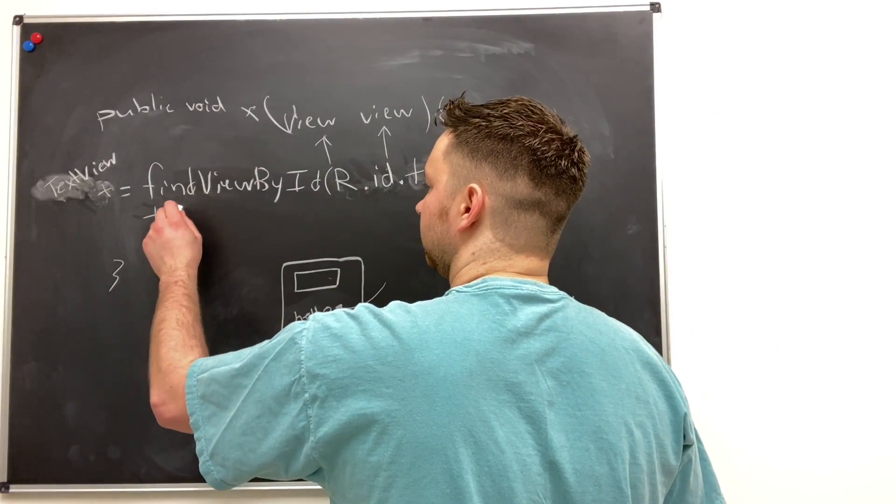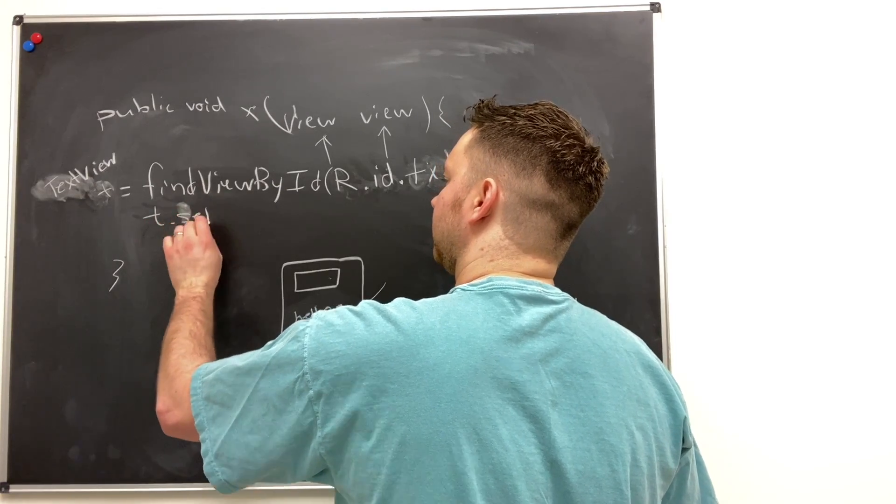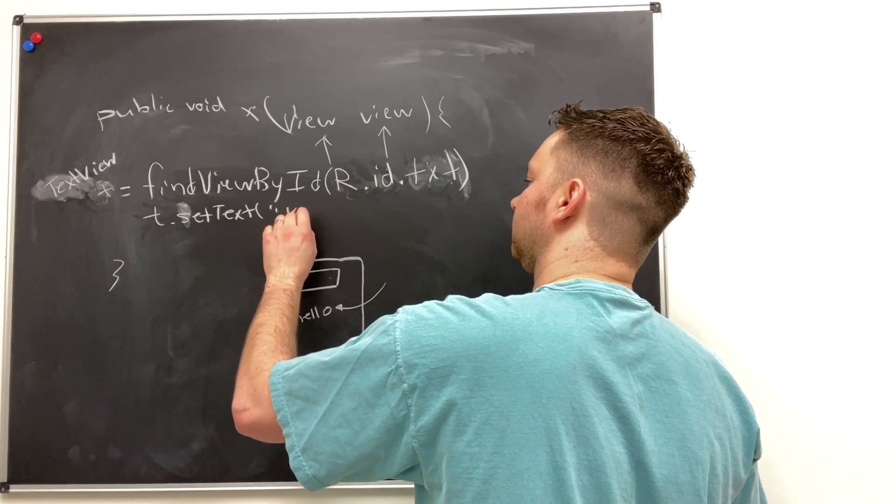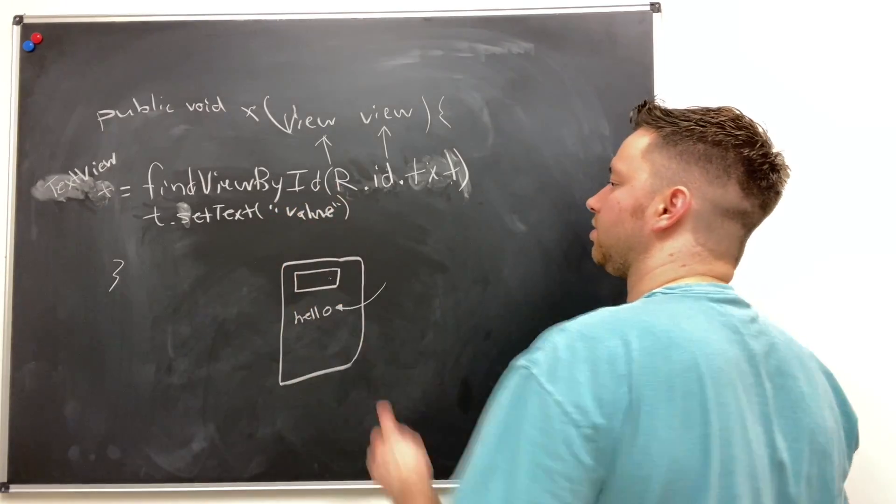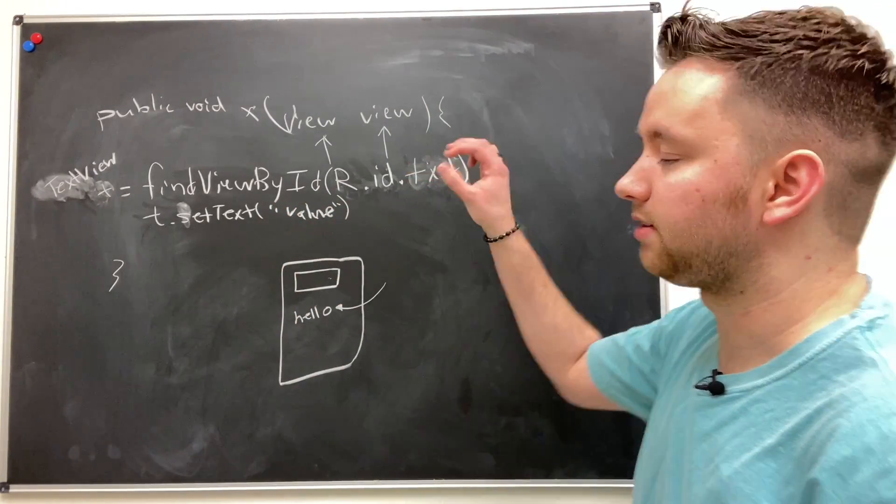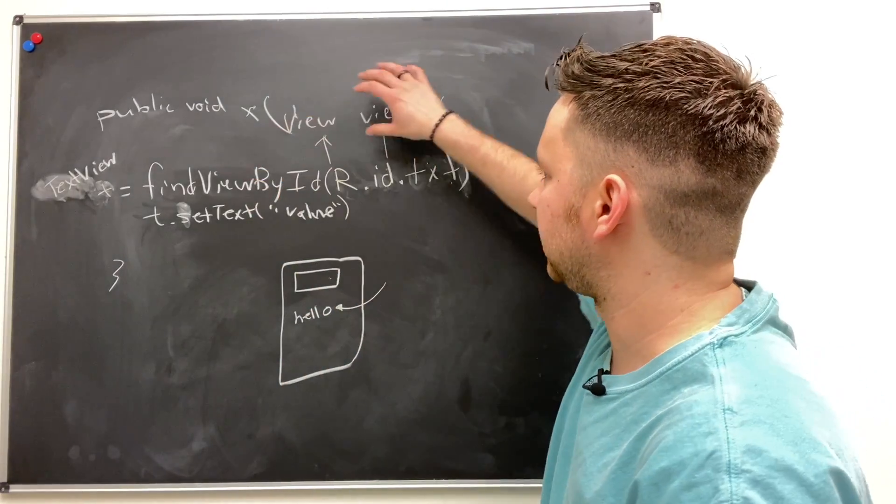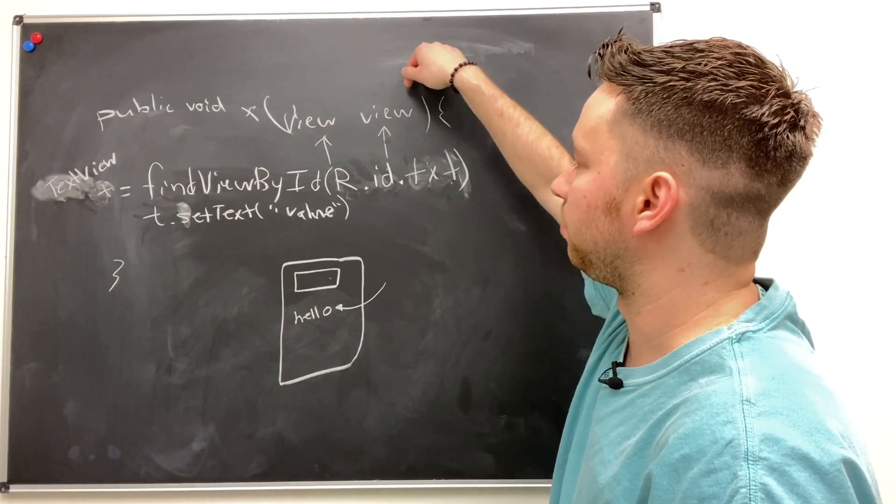And then what you can do is you can say T dot set text and pass in some value. So that is how you can access other elements or other views besides the one that's passed in through the parameter.